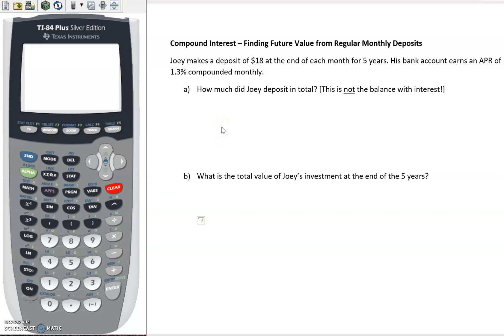The first one here: Joey makes a deposit of $18 at the end of each month for five years. He's got a bank account that earns an APR of 1.3% and that's compounded monthly.